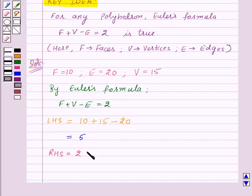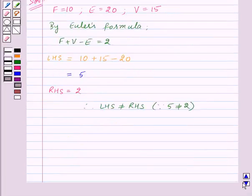Therefore LHS is not equal to RHS, as 5 is not equal to 2. So we can say that Euler's formula is not satisfied.